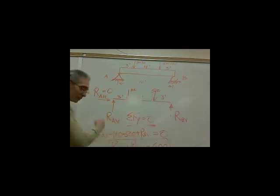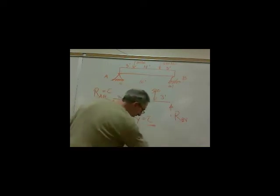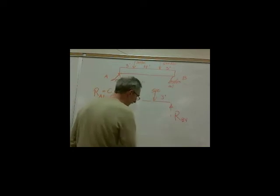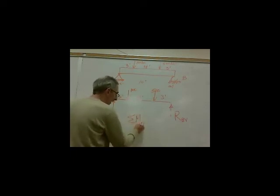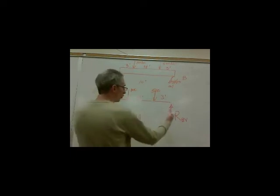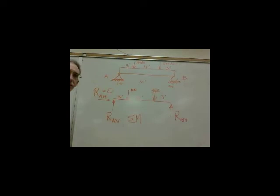So, I'm going to erase this, but remember, R, A, V plus R, B, V equals six hundred. What's my next equation that I can write? I've got two unknowns. I've got this one and this one, R, A, V and R, B, V. I would like to sum moments where, do you think?